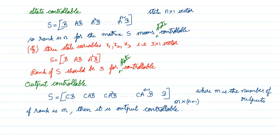There is another definition called output controllability. Output is controlled by the input — we say it is output controllable. For this, we take the matrix [CB | CAB | CA²B | ... | CA^(N-1)B | D], where M is the number of outputs. If the rank of this matrix equals M, then the system is output controllable. For state controllability we look at the number of states N; for output controllability we look at the number of outputs M.